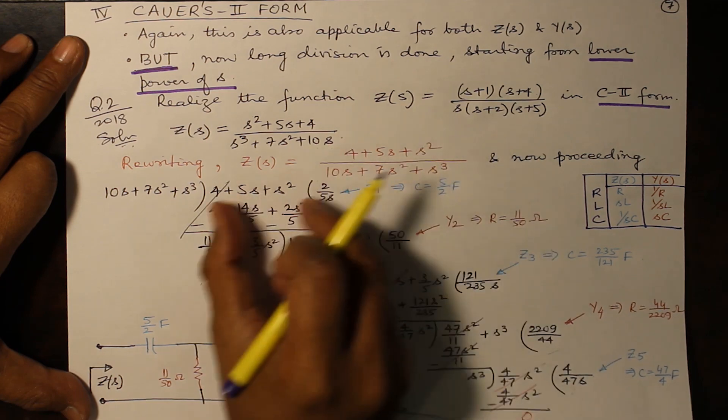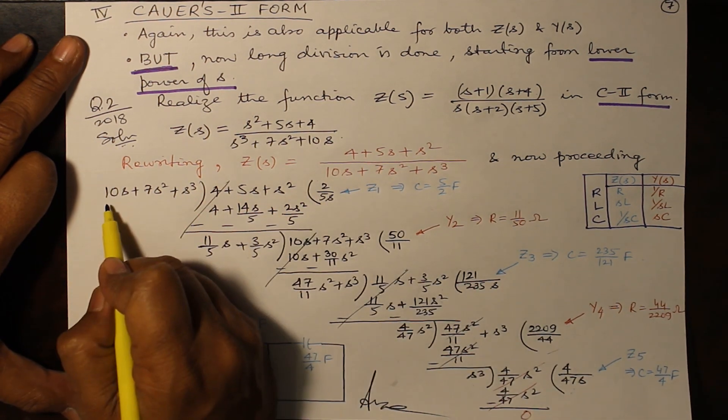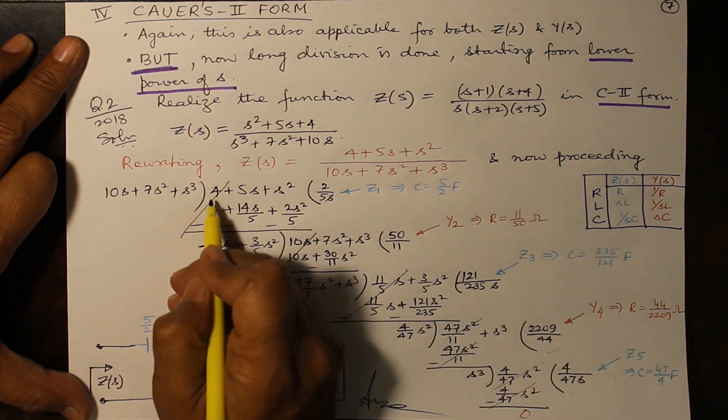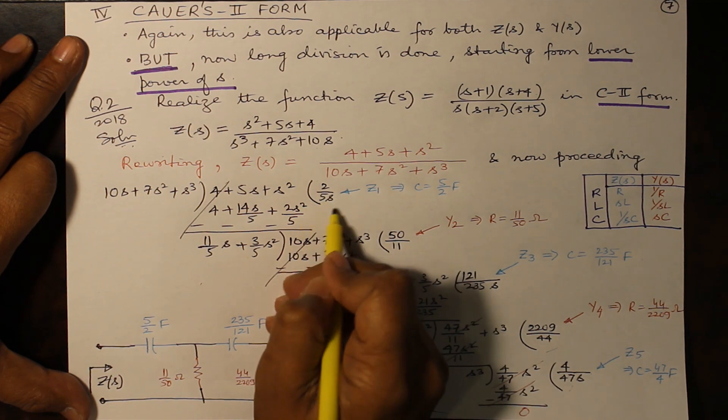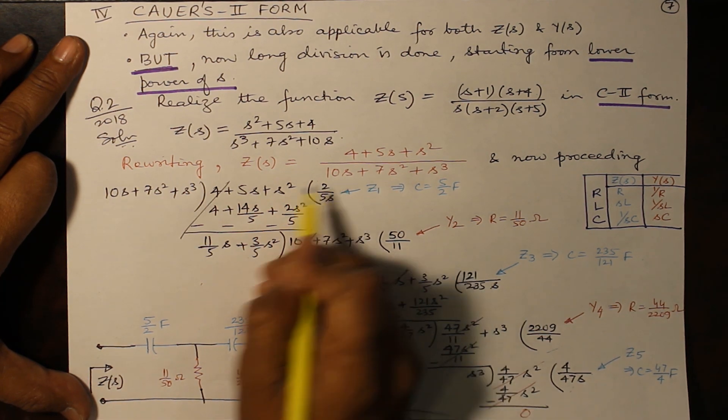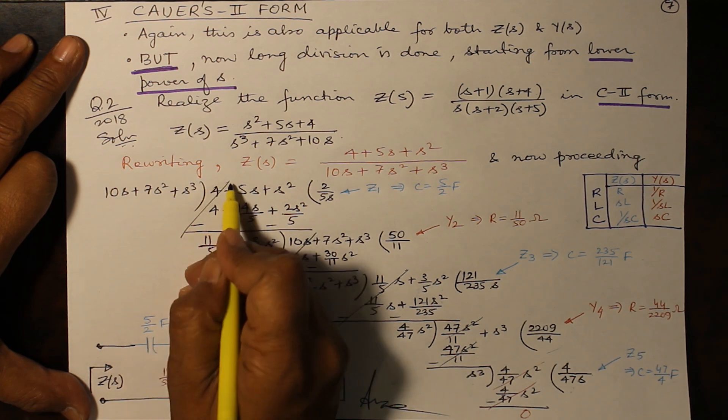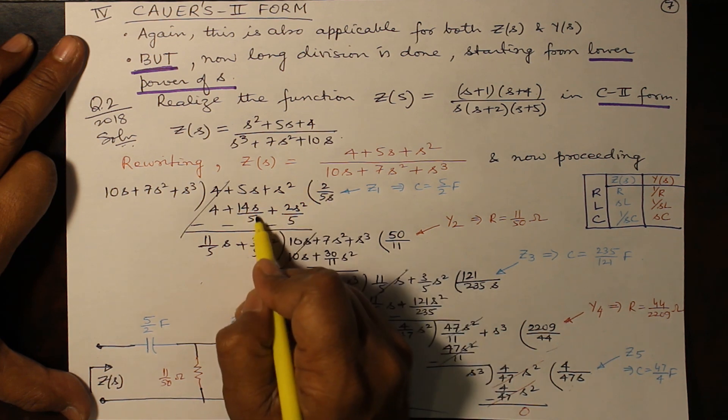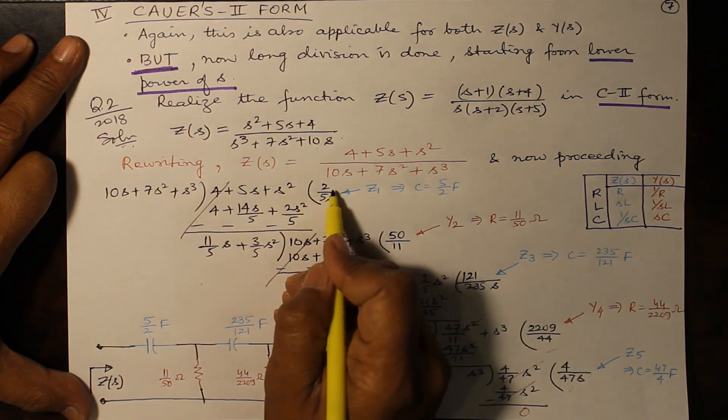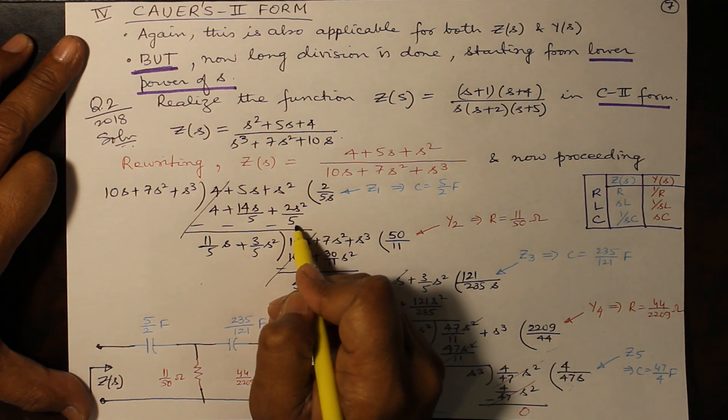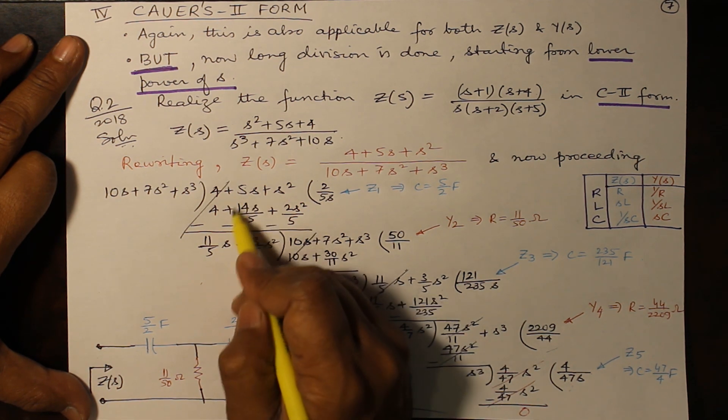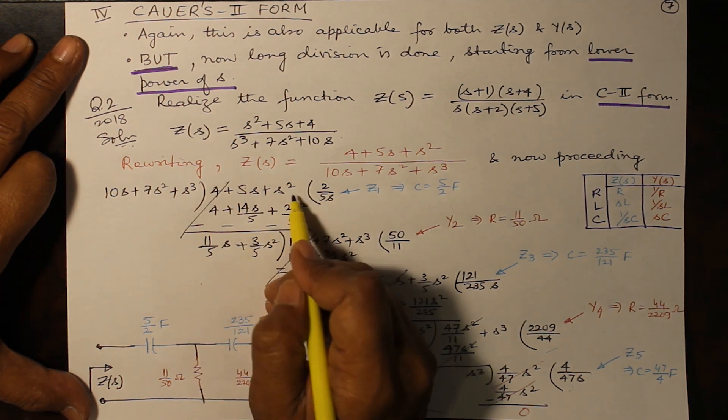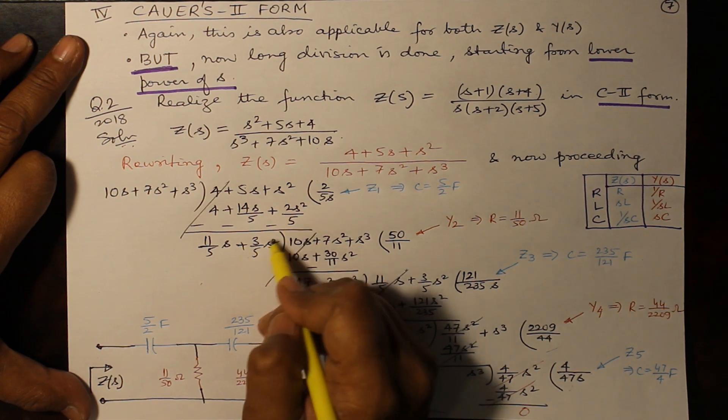Now this will be written here and try to divide it. What should be multiplied to 10s so that it becomes 4? You can do 4 divided by 10s, you will get 2 by 5s. When 2 by 5s is multiplied to 10s it will give you 4, so gets cancelled. Next: 7s² multiplied by 2 by 5s will give you 14s by 5, and s³ when multiplied by 2 by 5s will give you 2s² by 5. Subtract these: 5 minus 14 by 5 gives you 11 by 5s, and 1 minus 2 by 5 gives you 3 by 5 into s².